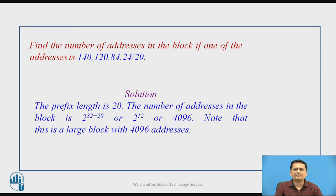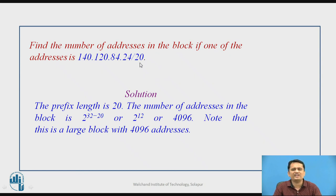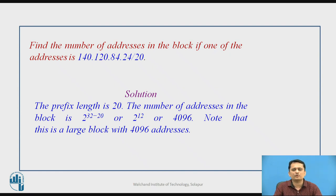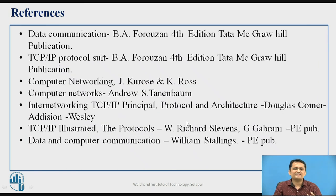Another example: given an IP address with /20, how many addresses are in the block? Slash 20 means 20 bits represent the network ID, leaving 12 bits for the host ID. Therefore the number of addresses in the block is 2 raised to 12, which equals 4,096 different hosts. This is how classless representation works using CIDR, where slash n indicates the number of bits representing the network ID part.